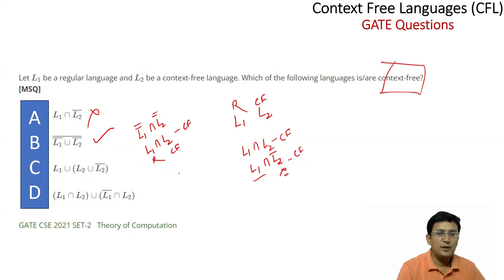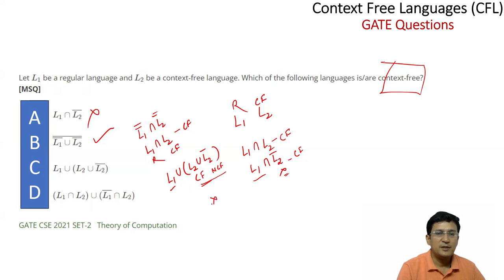Then we have L1 union L2 union L2-complement. L2 is a context-free language. When you take the union of a context-free language with a non-context-free language and a regular language, the result is non-context-free. The last statement is L1 intersection L2 — this is context-free. We have already discussed that a context-free language intersected with a context-free language yields a context-free language.